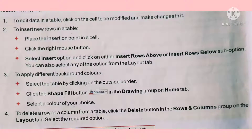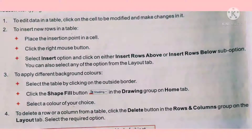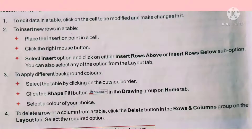So we have seen how to enter data in a table, how to do editing and make changes, how to add rows, and how to change background color. To delete a row or column from a table, go to the layout tab, find the rows and columns group, select the delete button, and select the required row or column to delete it.